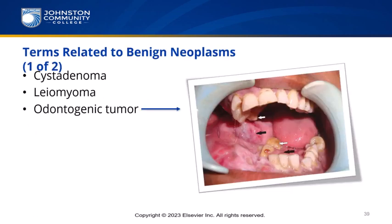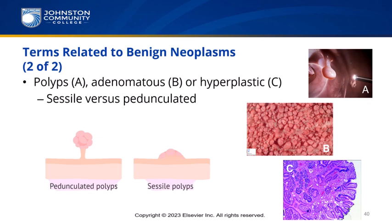Terms related to benign neoplasms: Cystadenoma — -oma means tumor — are glandular tumors filled with cysts, commonly appearing in the pancreas. Leiomyoma is a smooth muscle tumor that may occur throughout the digestive tract. Odontogenic tumors arise around the teeth and jaw. Polyps are usually benign growths on mucous membranes, most commonly in the colon. Adenomatous polyps develop from glandular tissue and have potential to become malignant. Hyperplastic polyps are small growths that usually do not become malignant. Both types may appear as sessile — flat — or pedunculated — having a stalk.